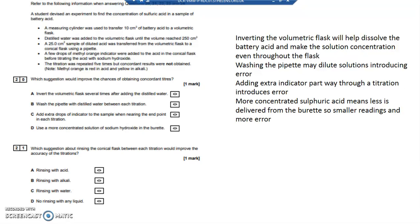Adding an extra indicator—no, that's not a good idea, that introduces extra error. More concentrated sulfuric acid in the burette means less is delivered from the burette. To increase accuracy and lower percentage error, you want more from the burette, not less. So your answer is A.